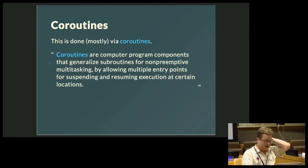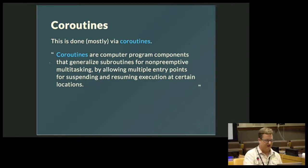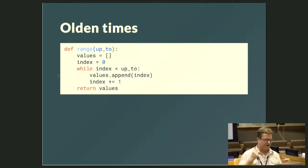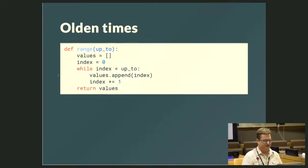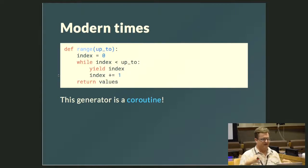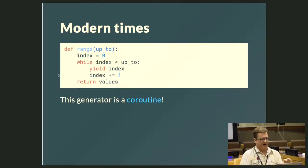This is done using coroutines. Coroutines are computer program components that generalize subroutines for non-preemptive multitasking by allowing multiple entry points for suspending and resuming execution at certain locations. In the olden times, if we needed a range, we'd iterate up to some value, append to an array getting bigger and bigger, then return it. Nowadays in the modern times, we can create a generator and yield these values — we don't need to keep all past values on hand. We can simply yield control back up to whoever's calling us and give them the value so far. This generator is a coroutine.